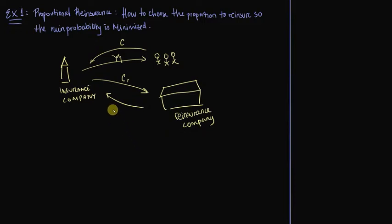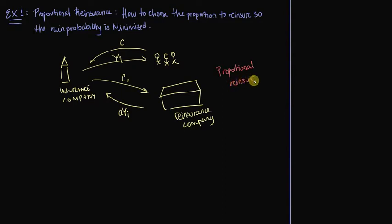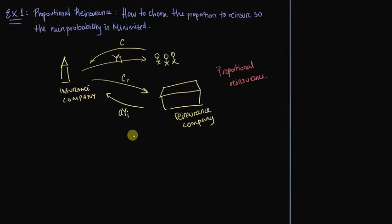In this case, the insurance company pays some premium to the reinsurance company, and in return, the reinsurance company will reimburse part of the claim that the insurance company pays out to its customers. The way this reimbursement is designed depends on which type of reinsurance we're considering. When we look at proportional reinsurance, the reinsurance company will reimburse a proportion A of the total claim paid out to the customer. It makes sense for this proportion A to be somewhere between 0 and 1.